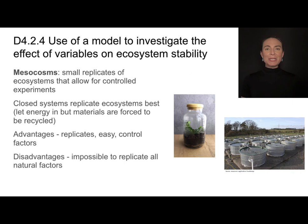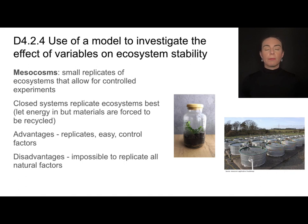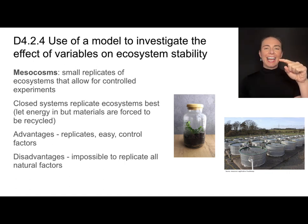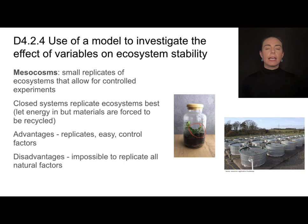Mesocosms are like little miniature ecosystems — small replicates of ecosystems that allow for controlled experiments. Here I've shown some mesocosms replicating an aquatic ecosystem. These replicates are really important because I can control variables to isolate something that I think might have an impact, and I can do many different trials. The best mesocosms are closed systems, because this illustrates the idea of nutrient cycling and why it's important — the Earth itself is a closed system, so nutrient cycles have to take place. Both open and closed systems can be mesocosms.